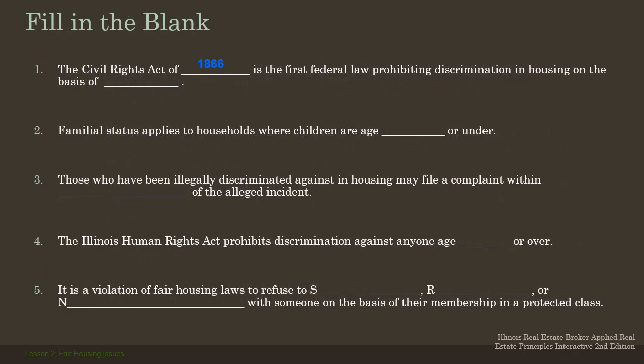The Civil Rights Act of 1866 is the first act that prohibits race discrimination. You want to know that the Civil Rights Act of 1866 makes race the predominant major fair housing protected class. Familial status applies to households where children are age 18 or under. Those who have been illegally discriminated against in housing may file a complaint within one year of the alleged incident. So if you feel you've been discriminated against, you have one year to bring that case to HUD or to the Illinois Human Rights Commission.